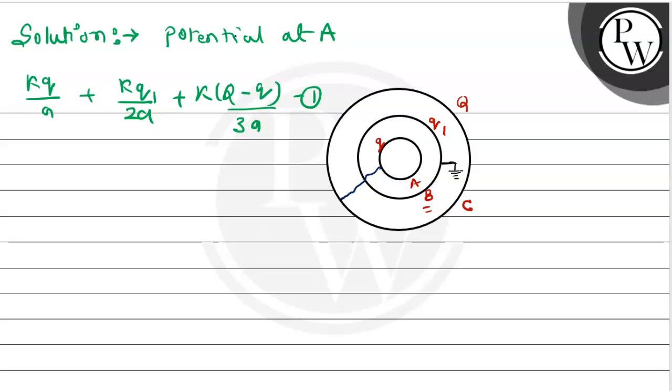Then when C is connected with A as shown in figure, then VA is equal to VC. Potential at A equals potential at C. KQ upon A plus KQ1 upon 2A plus K capital Q minus Q upon 3A.